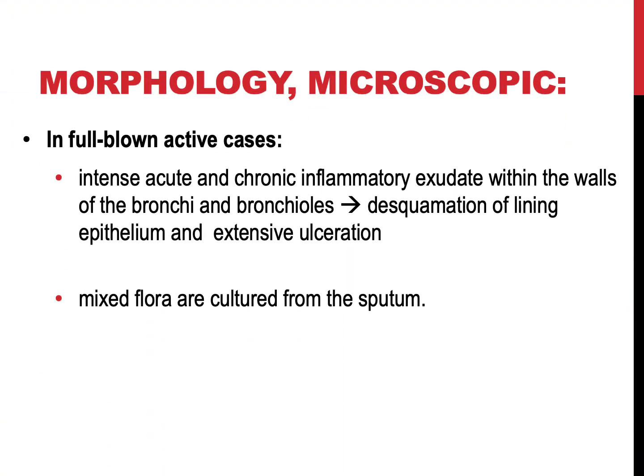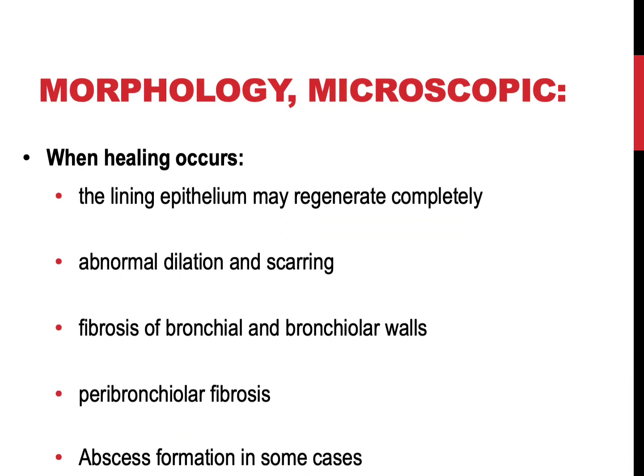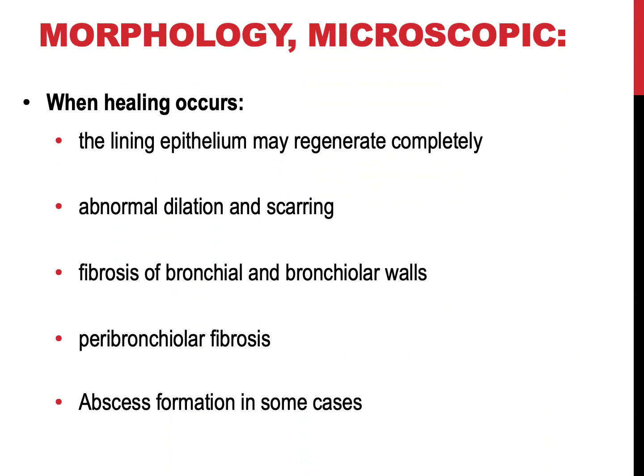The histologic findings vary with the activity and chronicity of the disease. In full-blown active cases, the main findings are an intense acute and chronic inflammatory exudate within the walls of the bronchi and bronchioles, desquamation of the lining epithelium, and ulceration due to severe inflammation. Typically, mixed flora can be cultured from the sputum, including staphylococcus, streptococcus, pneumococcus, enteric organisms, and anaerobic bacteria. When healing occurs, the lining epithelium may regenerate completely; however, the injury usually cannot be repaired completely and abnormal dilation and scarring persist.